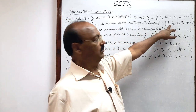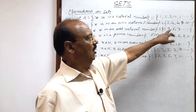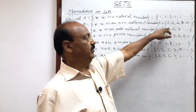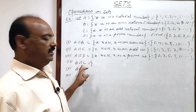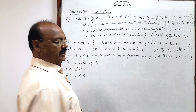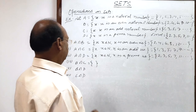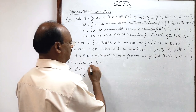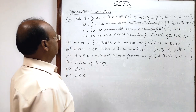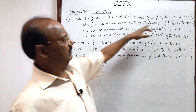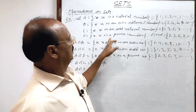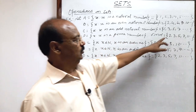B∩C: B is the set of even natural numbers and C is the set of odd natural numbers. No element is common between these two sets, so B∩C is simply the null set, which can be expressed as φ (phi).